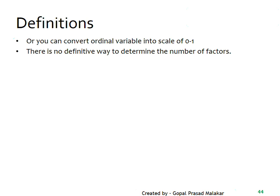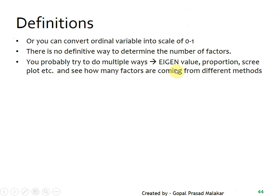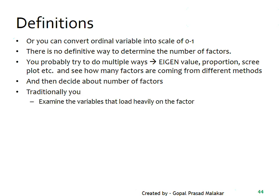In both PCA and factor analysis, there is no single way to determine the number of factors. You end up looking at eigenvalues, proportion values, scree plots, etc., and then decide how many factors to retain. Once you have the factors, you examine the variables that load heavily on each factor.